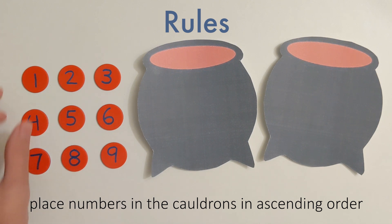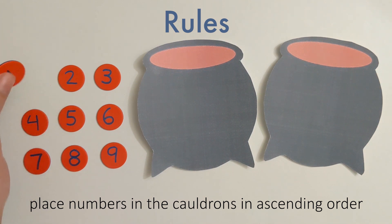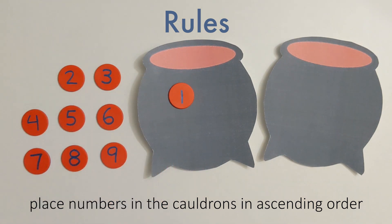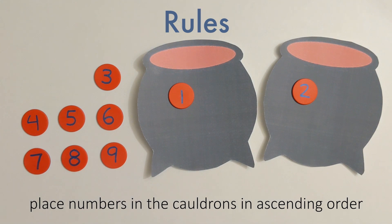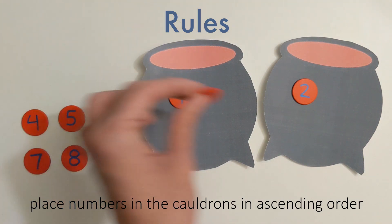So I'll place my number 1 in this cauldron to the left. Remember, we can place our numbers in either cauldron. Next, I have to place the number 2. I'll place my 2 in the cauldron to the right. 3, I'll also place in my cauldron to the right.